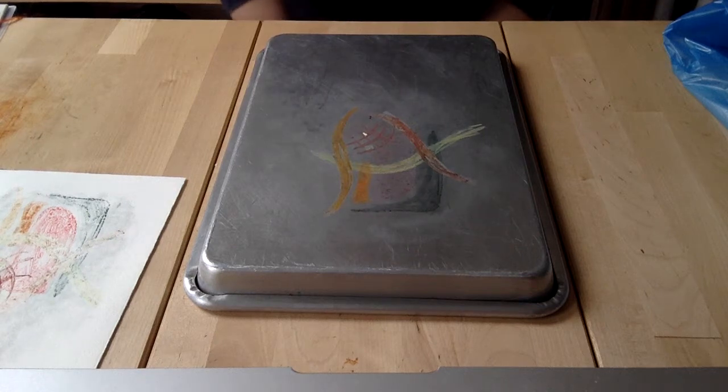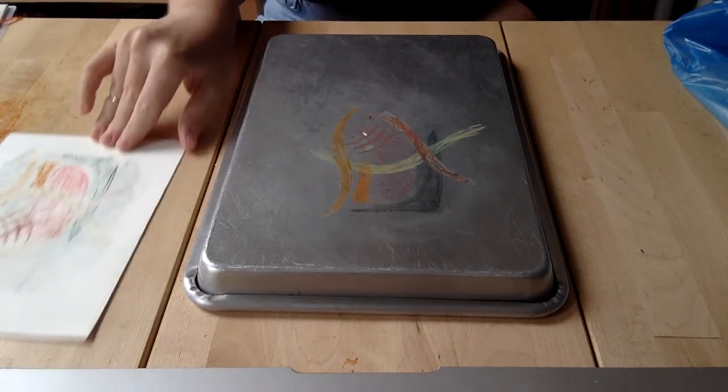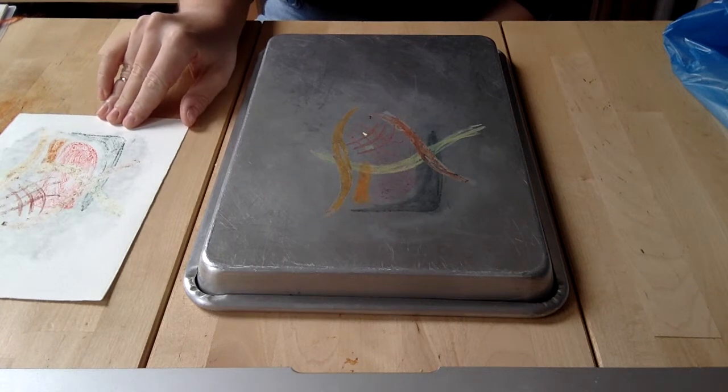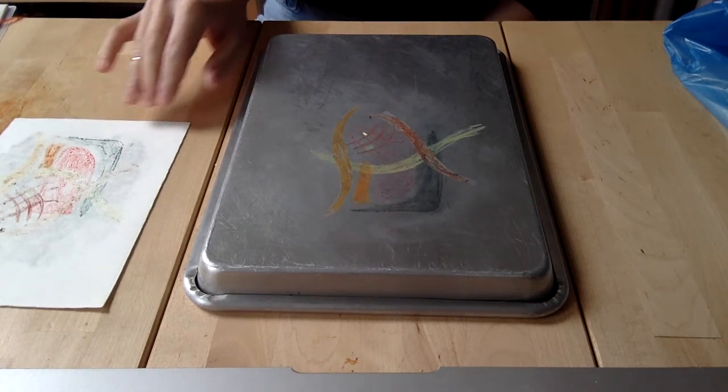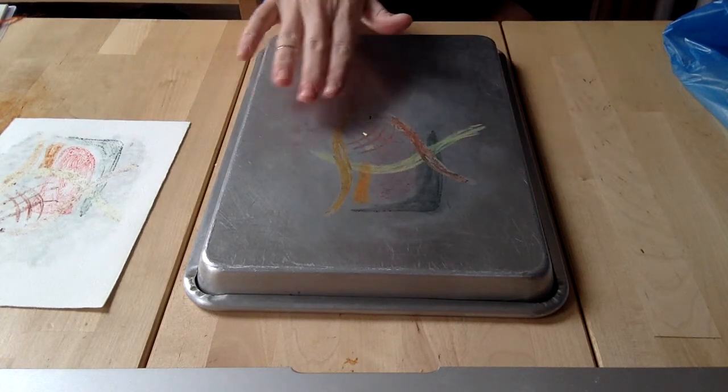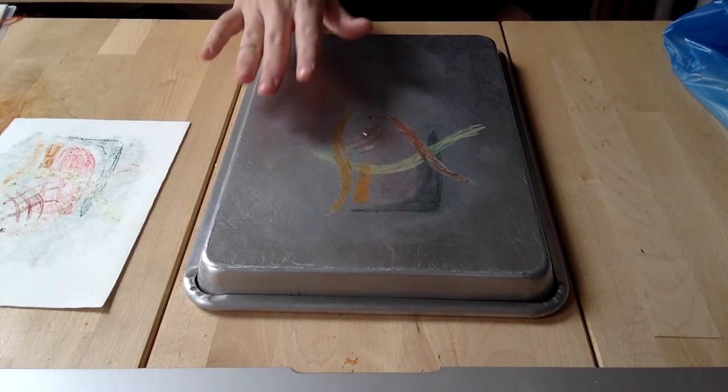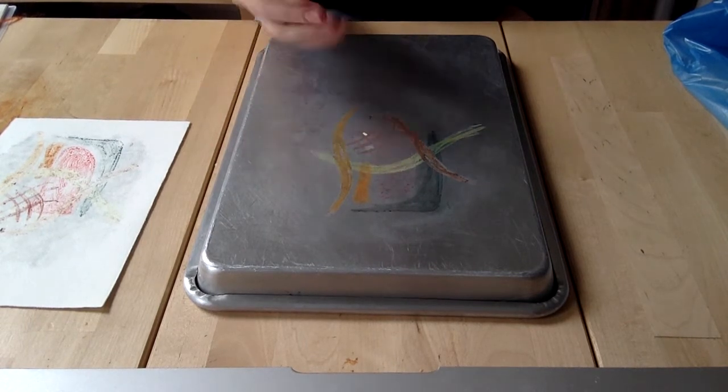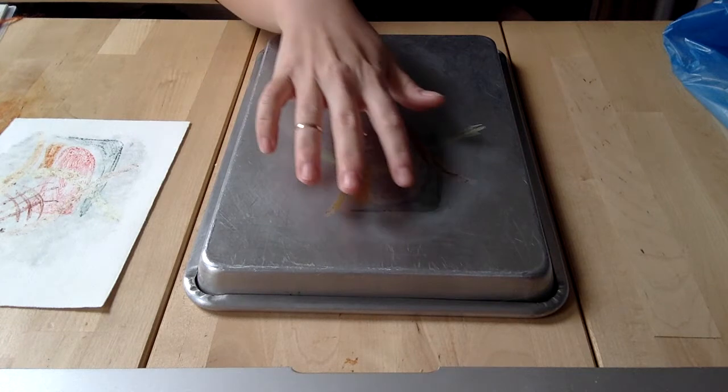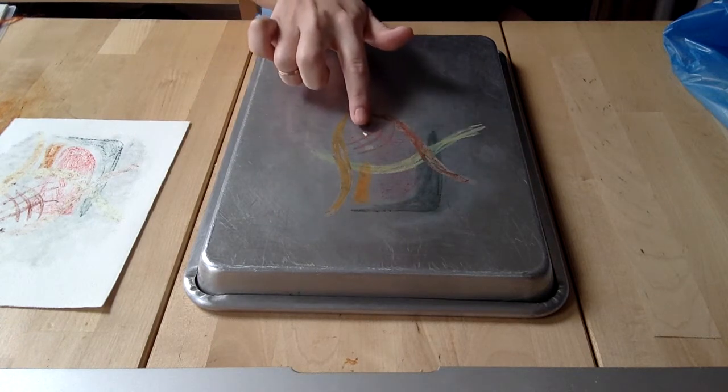An interesting part about monoprinting is that once we pull our first print from a plate, we can do something called a ghost print. You'll notice that on my plate there's still some pigment left. Oil pastel lasts quite a bit. Even parts of the watercolor are still there on my plate.